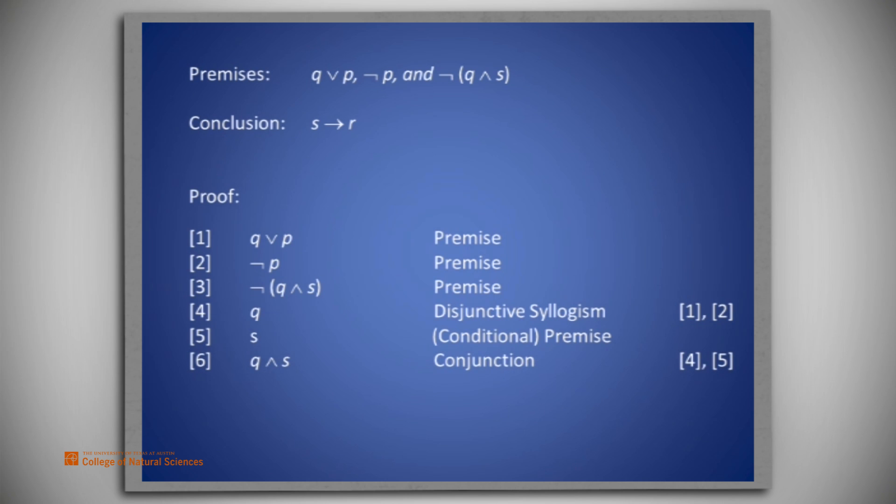Now comparing lines 3 and 6, we see that they are the negations of one another. So we do have contradictory premises, therefore we are able to conclude anything we want. What we want to conclude is R, so line 7 has the statement R from contradictory premises applied to lines 3 and 6.